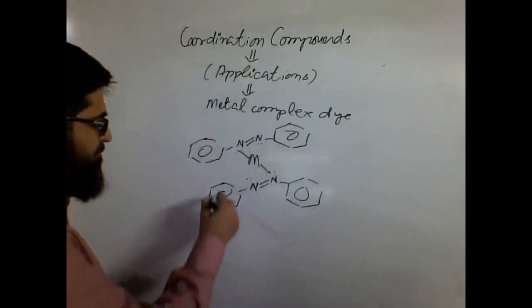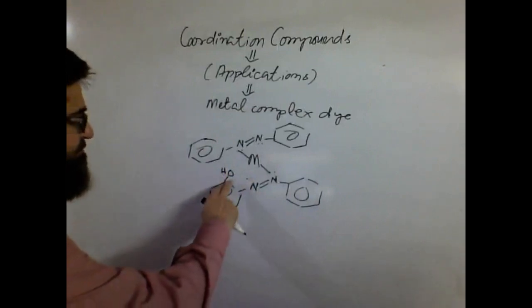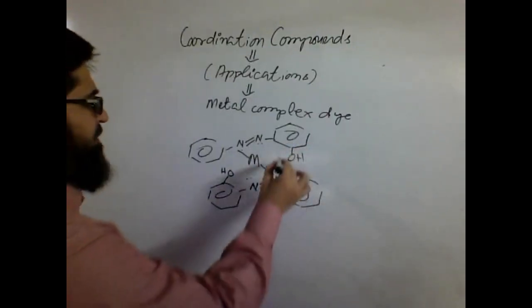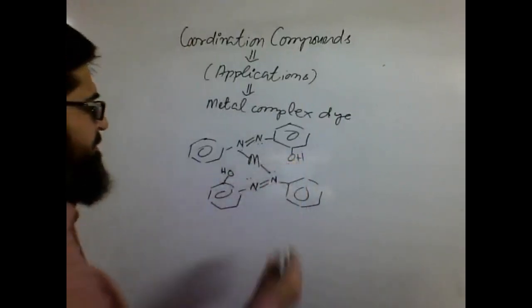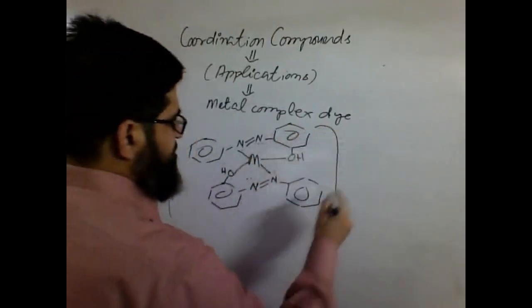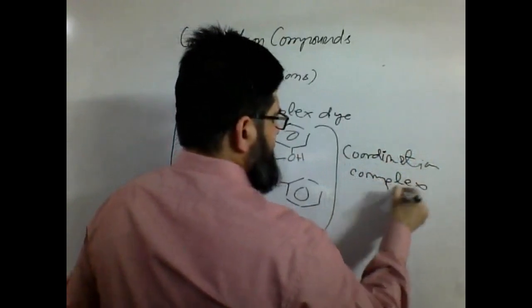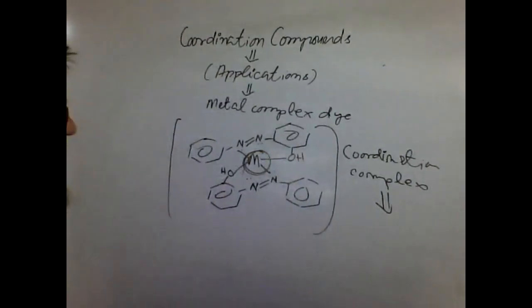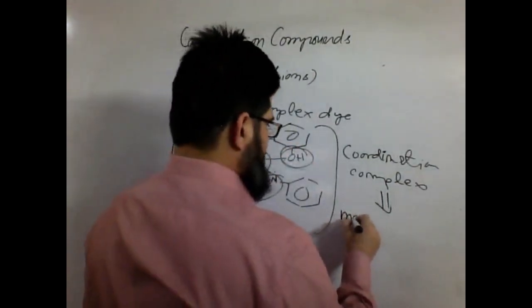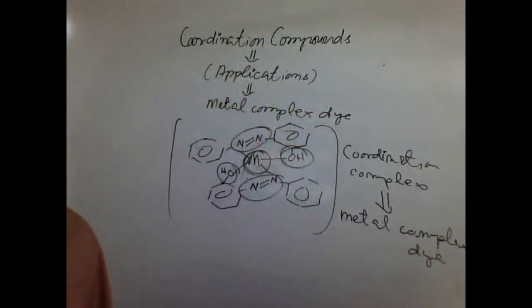What people did further was keep some other hydroxyl-donating groups on the couplers as well. Like the hydroxyl groups (OH), where this entity could act as a donor and could also coordinate with the metals. This is how people prepare coordination complexes — using metals, azo groups, and other donors — for the preparation of metal complex dyes for wool, nylon, and other textile materials.